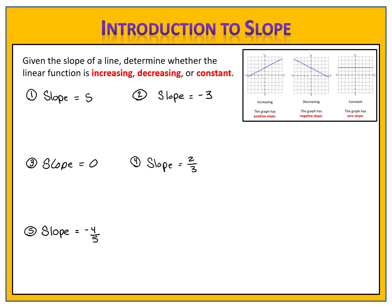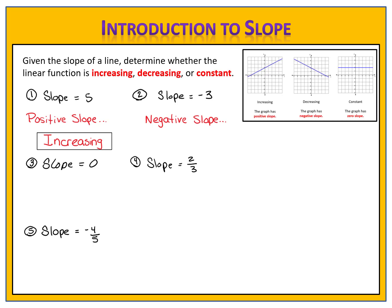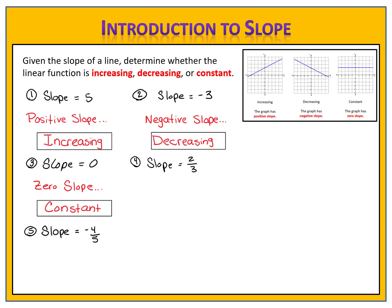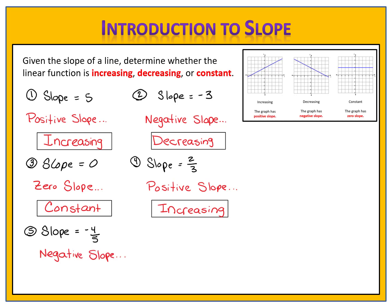Let's compare answers. In exercise one, we have positive slope — a function with positive slope is increasing. In exercise two, we have negative slope — a function with negative slope is decreasing. In exercise three, we have zero slope — a function with zero slope is constant. In exercise four, we have positive slope — a linear function with positive slope is increasing. In exercise five, we have negative slope — a linear function with negative slope is decreasing.